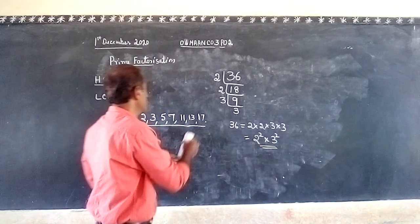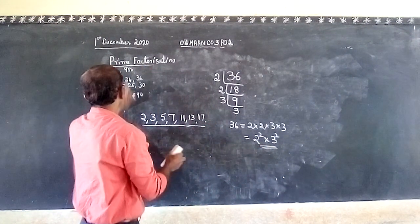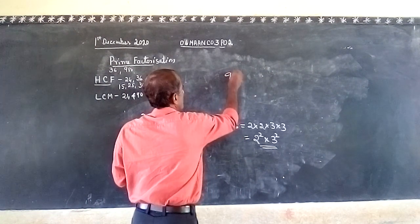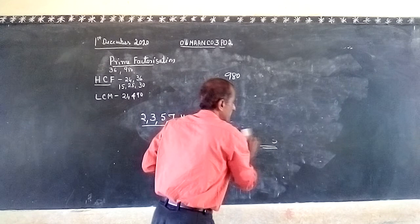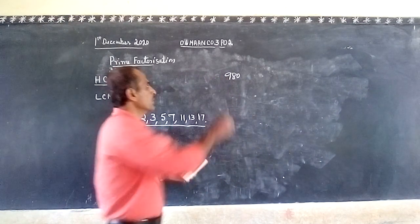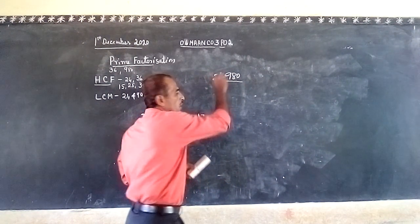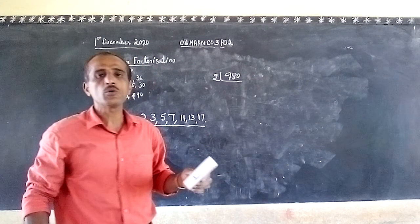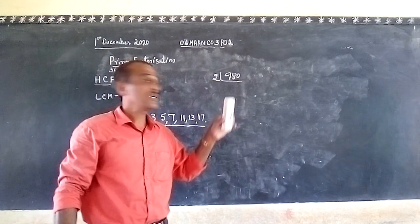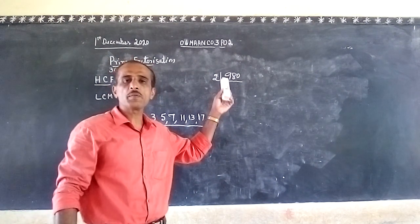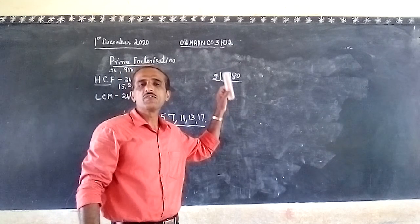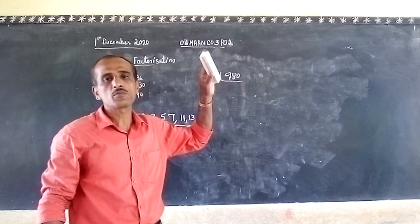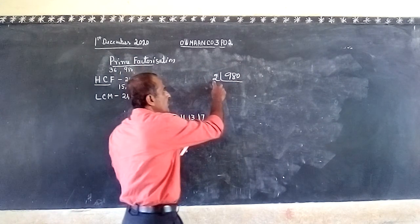In the same way, let us find the prime factors of 980. Can 980 be divided by 2? Yes — to check divisibility by 2, the units digit must be 0, 2, 4, 6, or 8. Since 980 ends in 0, it is divisible by 2.